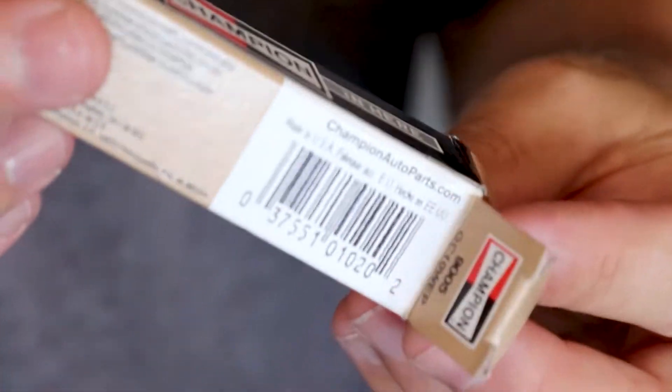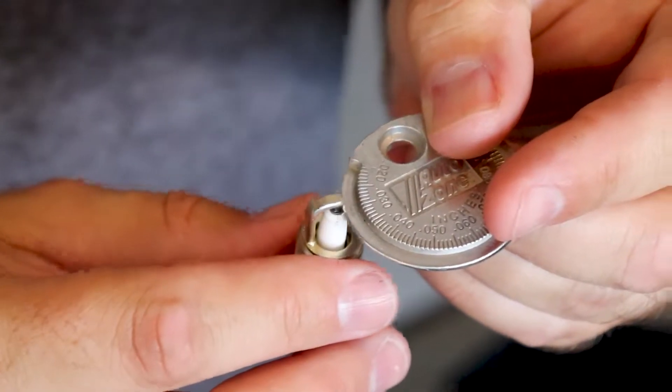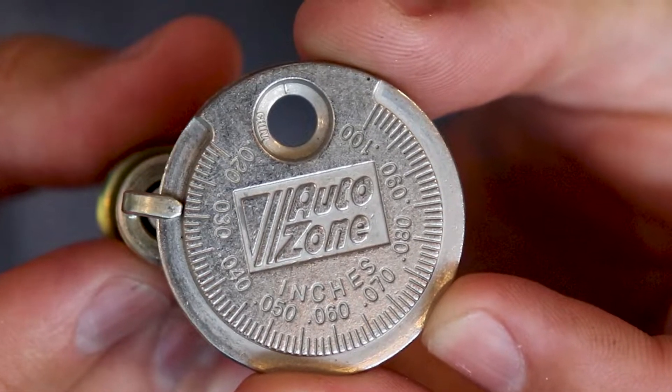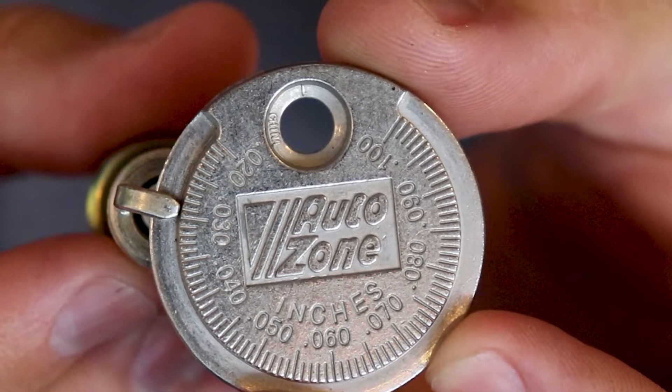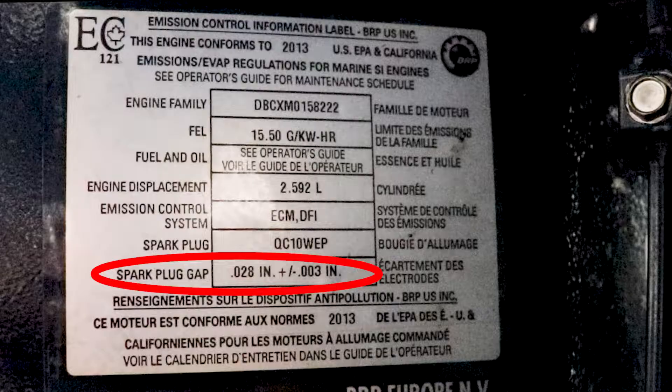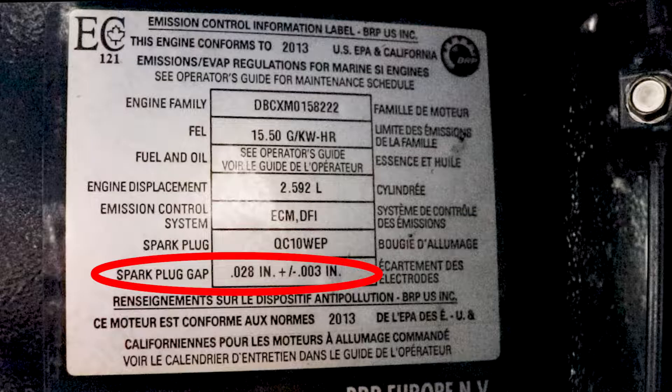First thing we're going to want to do with our new spark plugs is check the gap, and that can be done with a gapping tool from any auto parts store. Be sure to check your manual, but for our Evinrude 150 E-Tec, we want our spark plug gap to be 28 thousandths with a tolerance of plus or minus three thousandths. And again, that information is found right here on the motor mounting bracket.